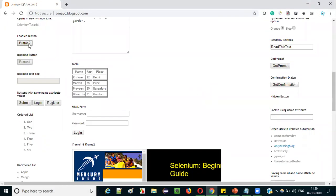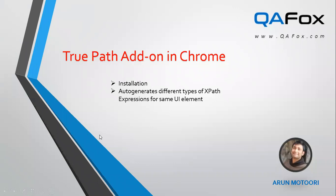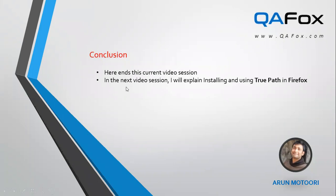That's it for the practical demonstration. Let's switch back to presentation mode. I have practically demonstrated how to install TruePath add-on in Chrome browser, how to auto-generate different types of XPath expressions for the same UI element, and how to copy them for use in Selenium automation scripts. In the next video session I'll explain installing and using the same TruePath add-on but in Firefox browser. See you in the next video session — thank you, bye.